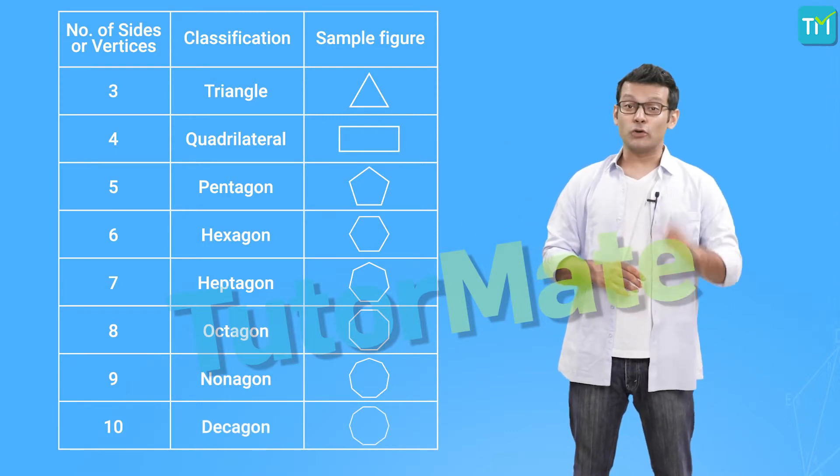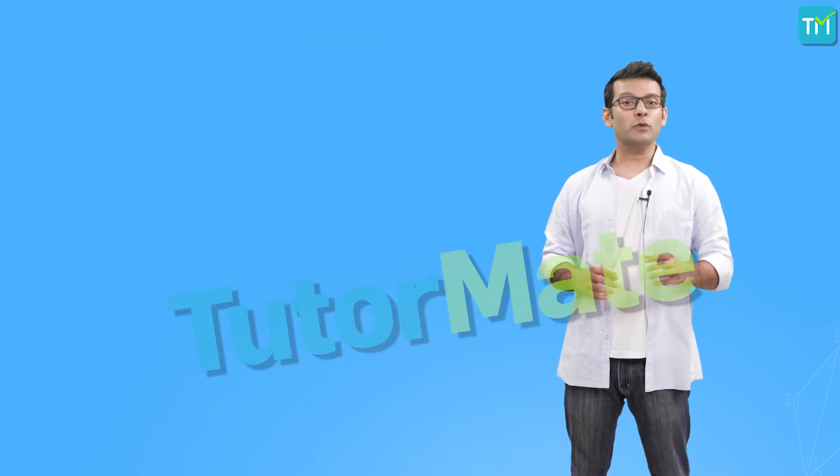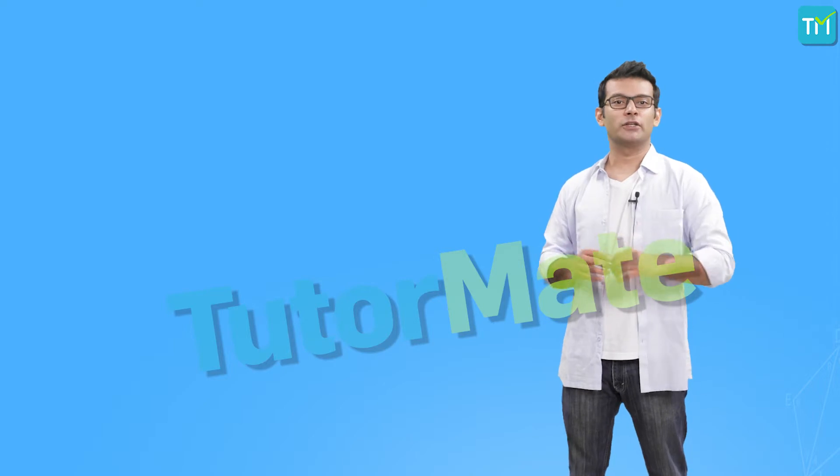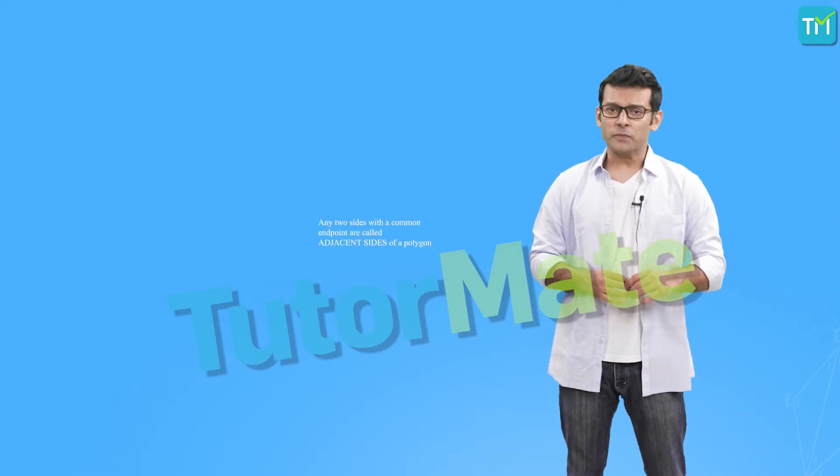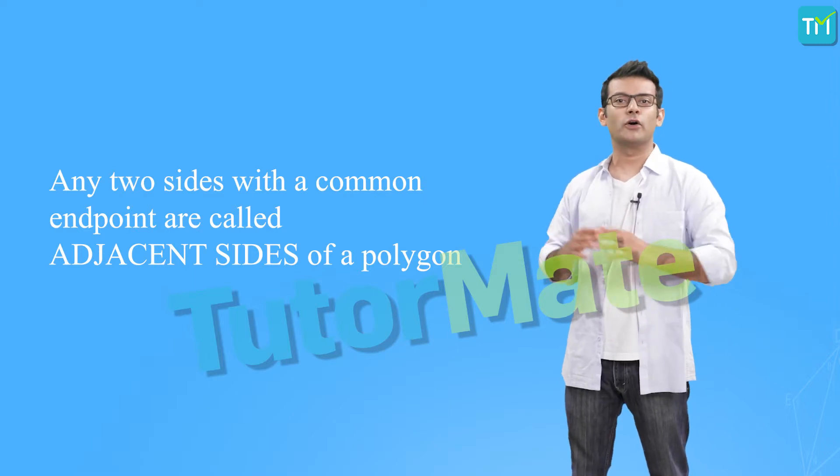Now, those were the most important types of polygons that we will come across. Next, we will see a few important terms related to polygons. So, any two sides with a common endpoint are called adjacent sides of a polygon.